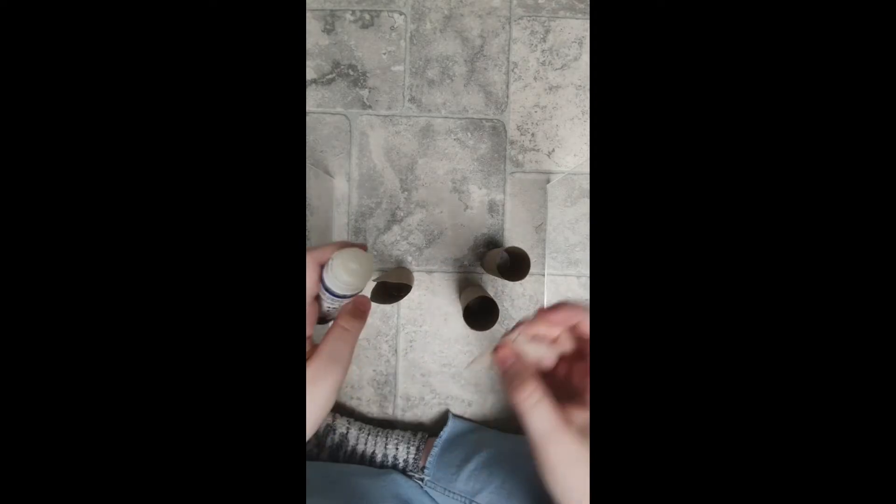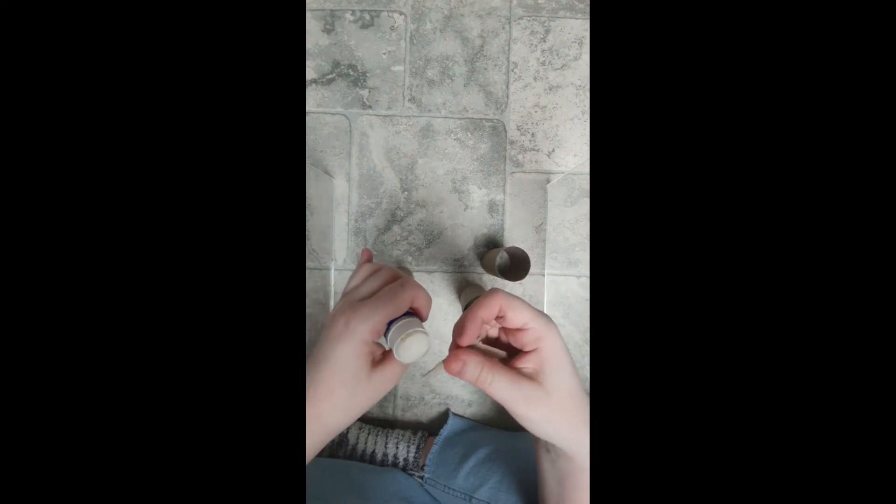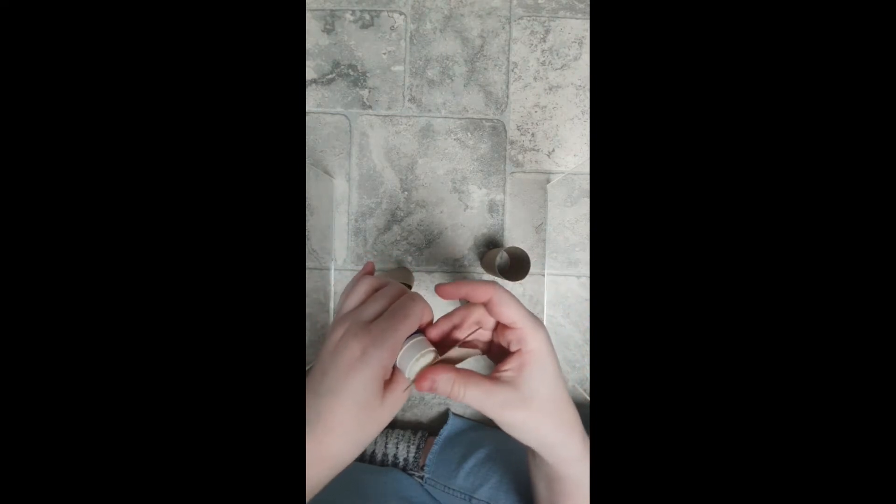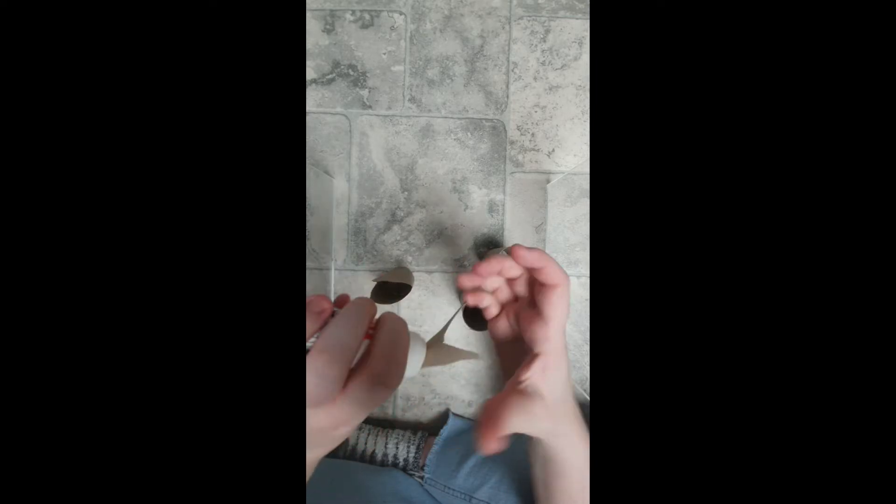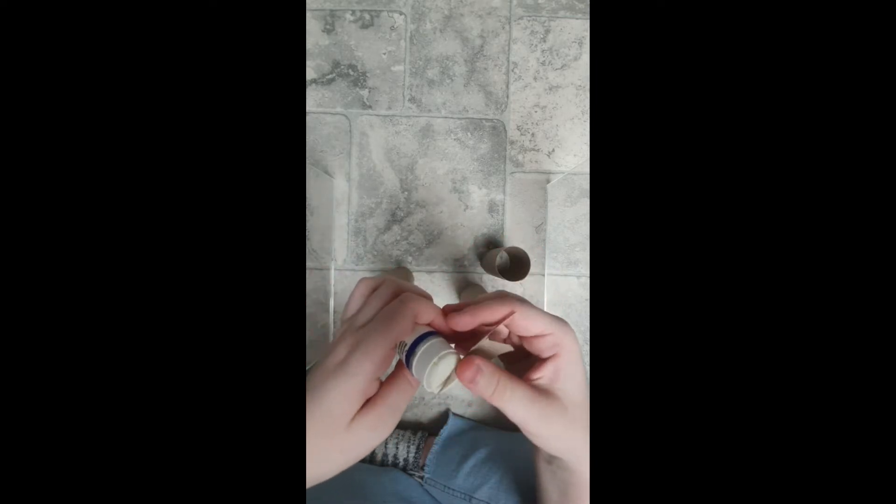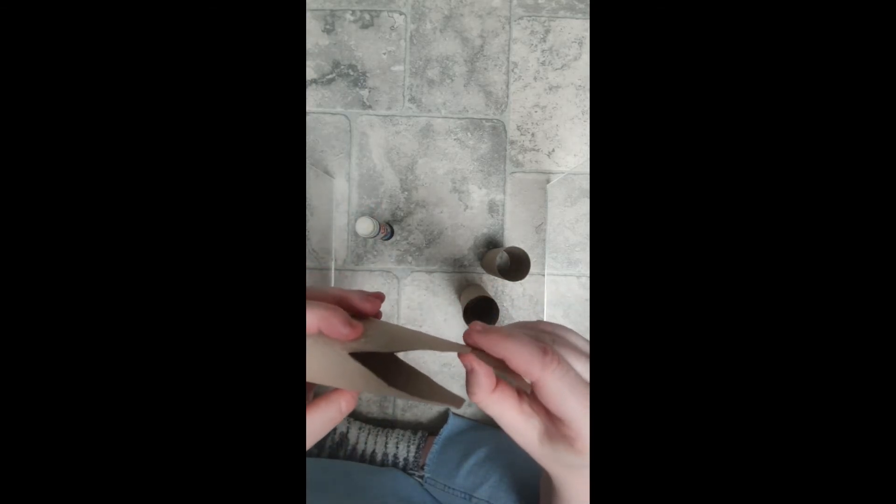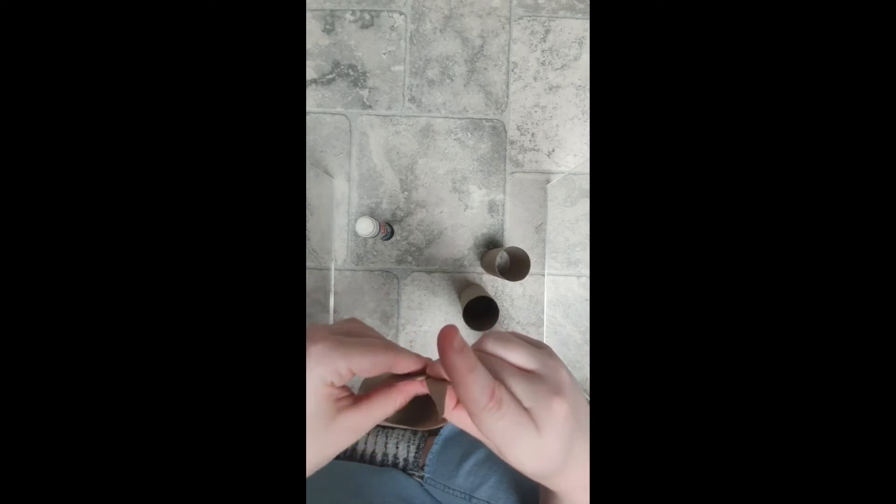Get your glue stick, glue the end of the tongue, this bit, and stick it to the bottom of your tube.